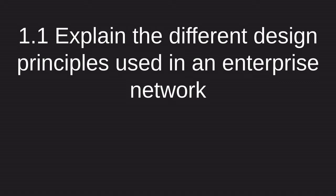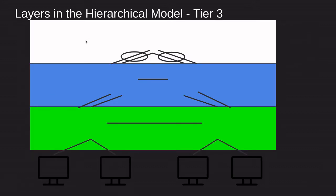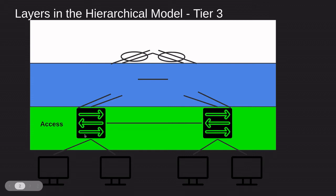In this video we are going to go over explaining the different design principles using an enterprise network. To start, we are going to take a look at the hierarchical model — the three-tier topology — which has three layers. The first is the access layer, where end devices like computers, printers, and cameras are attached. This is the first access point and they connect to the switches here at the access layer.